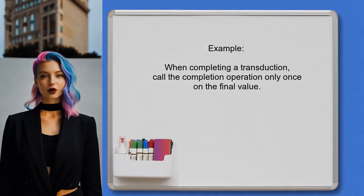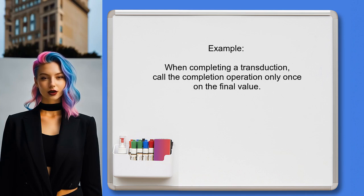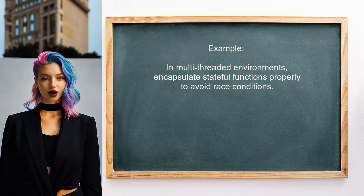In another example, when completing a transduction, make sure to call the completion operation only once on the final value. This avoids any potential issues with double processing. Lastly, when using transducers in a multi-threaded environment, be cautious about stateful functions. Always encapsulate them properly to avoid race conditions or unexpected behavior.